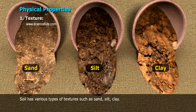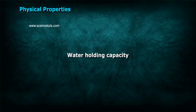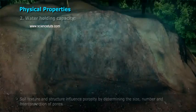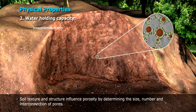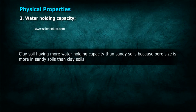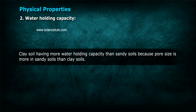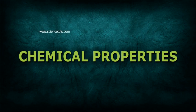Texture: Soil has various types of textures such as sand, silt, and clay. Water holding capacity is influenced by soil texture and structure, which determine the size, number, and interconnection of pores. Clay soil has more water holding capacity than sandy soils because pore size is greater in sandy soils than clay soils.